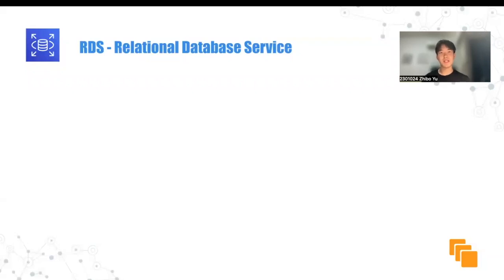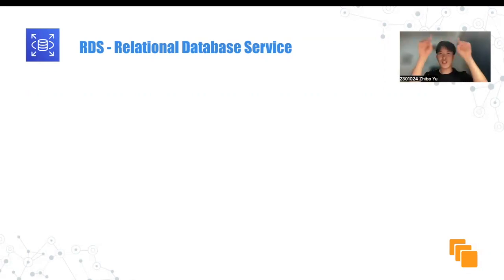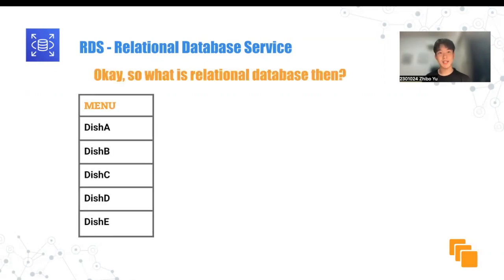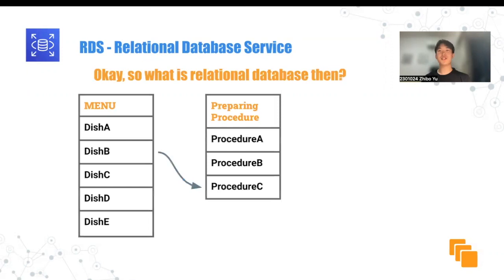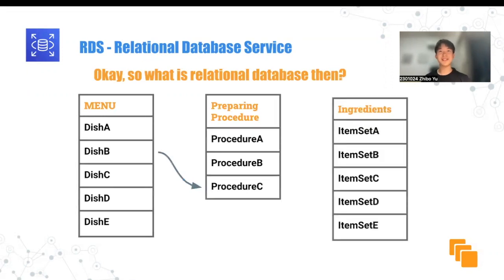Let me use an example to explain. Imagine you are the owner of a restaurant, and instead of storing all your data — including your menu, the preparing procedure and ingredients, and so on — into one giant table, every menu item becomes its own table of data, where each dish is connected to its unique preparing procedure, which is another table of data. Every procedure also involves different ingredients and needs, which might become a third table of data. With a database structure like this, you as the owner can easily access and manipulate all the data.